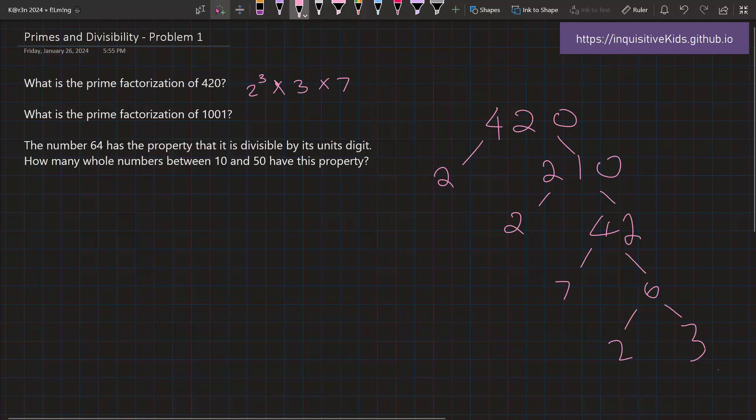When writing out prime factorizations, it's usually customary to write it in order from least to greatest. Now what is the prime factorization of 1,001? This one is not really efficient when it comes to using the traditional method of what we just did, which is the tree method.